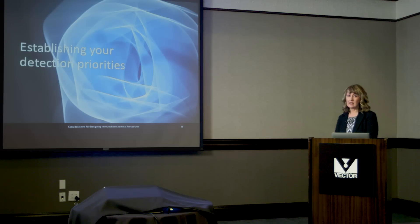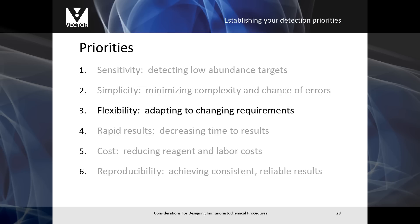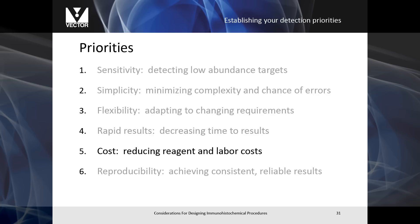A second step in designing your immunohistochemistry procedure is establishing your detection priorities. Some of these priorities can include the following: sensitivity, if you need to detect a low abundance target; simplicity, whether you need to minimize the complexity and the chance for any errors in your protocol; flexibility, which allows you to adapt to changing requirements in your laboratory; rapid results, if you need to decrease the time to achieve your results; cost, if you need to reduce reagent and labor costs; and reproducibility, if you need to repeat a specific assay over and over and achieve consistent and reliable results.